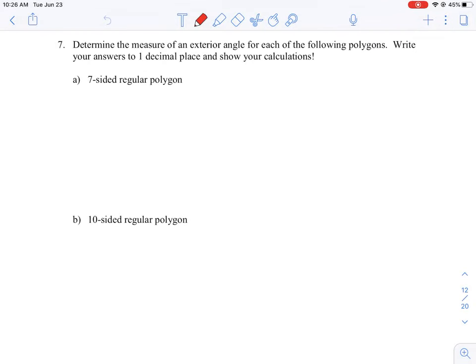Okay, so let's take a look at how to do question seven, where we're asked to find the exterior angle for each of the following polygon shapes. We need to show our calculations.